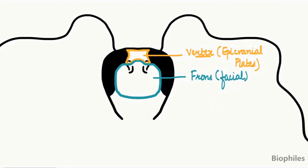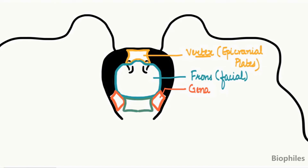The frons represents the facial sclerite. The next two sclerites are present adjacent to the frons, on the lateral side of the frons, and these two are called gena. They are present below the eyes, just on the lateral side of the frons. Below the frons, the last frontal sclerite is present which is called the clypeus — it is a rectangular plate. So in the front side of the head we have: vertex, frons, gena, and clypeus.